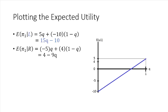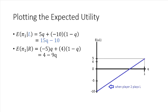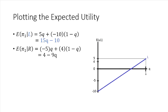that corresponds to this function 15Q minus 10. So you notice the vertical intercept is at negative 10 and when Q is 1, the expected utility of player one goes all the way up to 5. And this again corresponds to player one's expected utility when player two is playing the pure strategy L. So we'll just label that L.